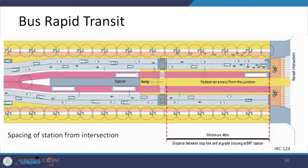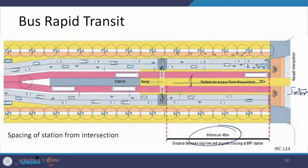When stations are near intersections, they should be provided at a minimum of 40 meters from the stop lines at the tangential line of the crossing road. The area up to the junction can be utilized for pedestrian movement, and the 4-meter station width guides pedestrians to the intersection facilities so they can move to the other side.